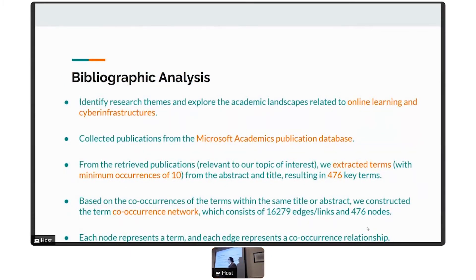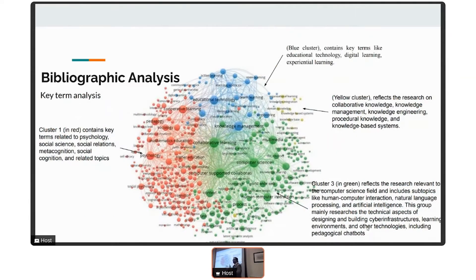In the bibliographic analysis, we collected several publications, conference publications from Microsoft Academic, an open database that harvests thousands or millions of publications. We searched for keywords like online learning and cyber infrastructures. We extracted key terms that showed up at least 10 times in the abstract, title, and keyword section, around 407. We constructed a co-appearance network, how many times these terms showed up and how many times they showed up with other terms. We constructed a network consisting of this number of nodes and links. A node represents a term or keyword and the link means that these two keywords showed up in the same paper.